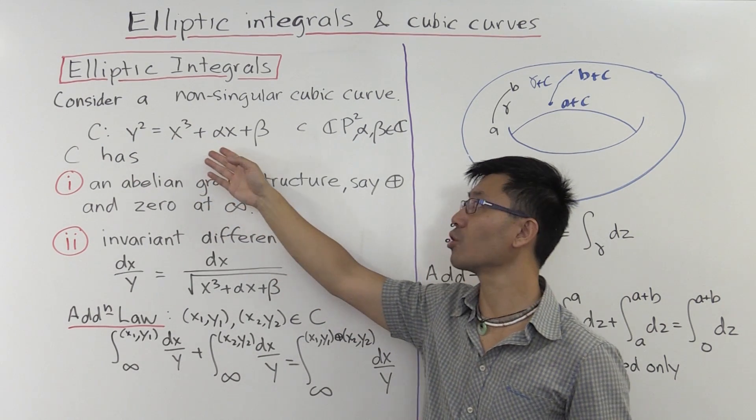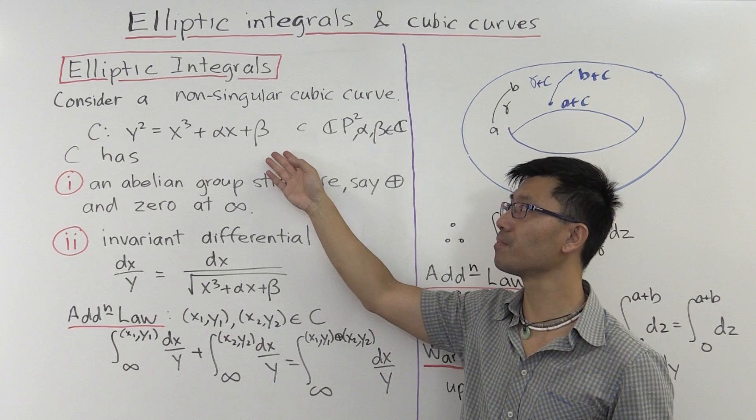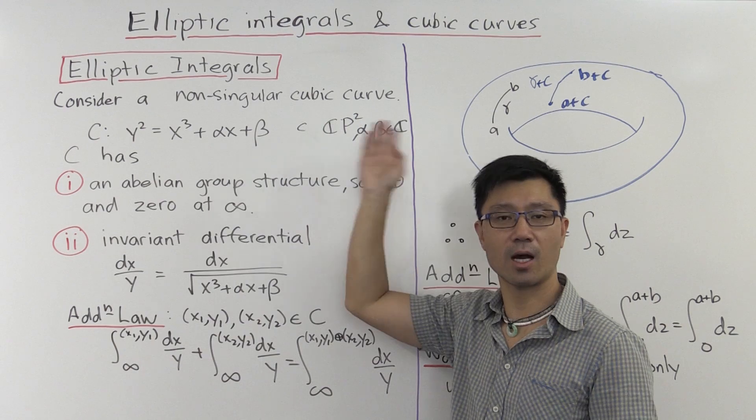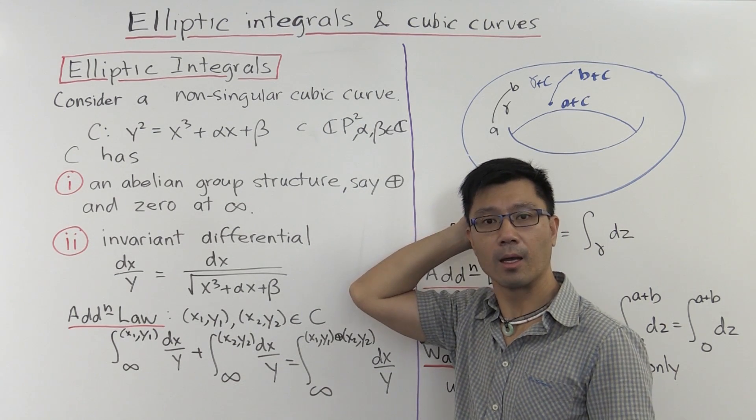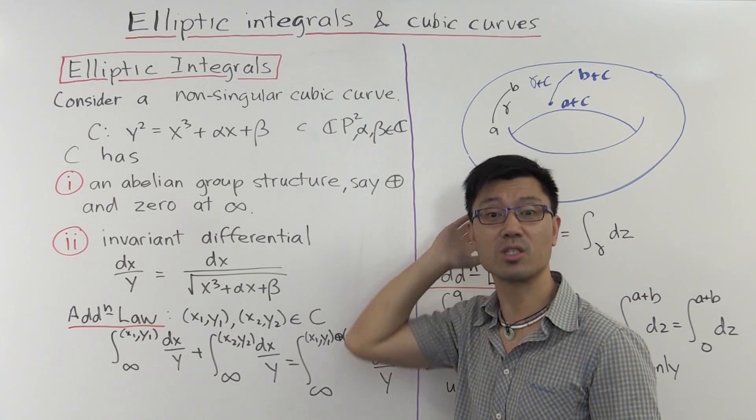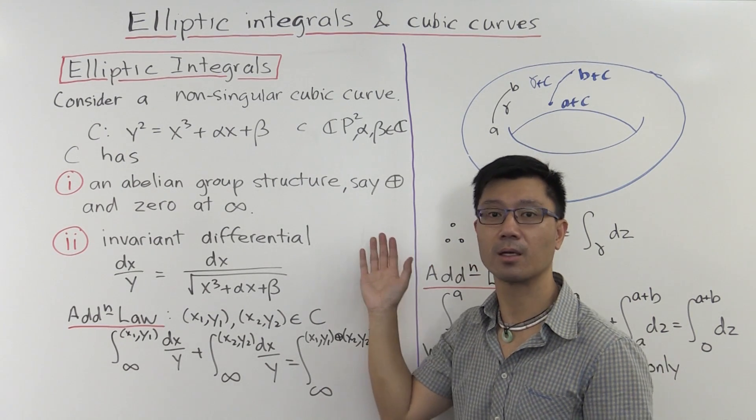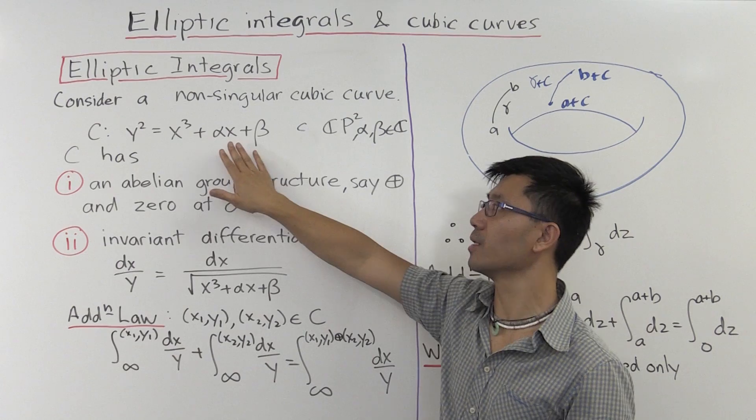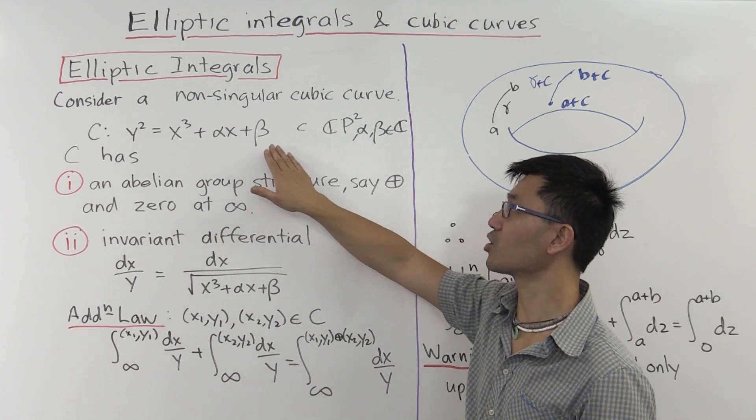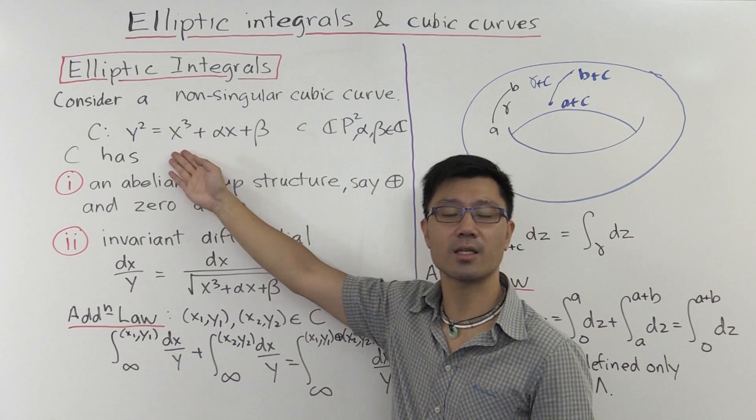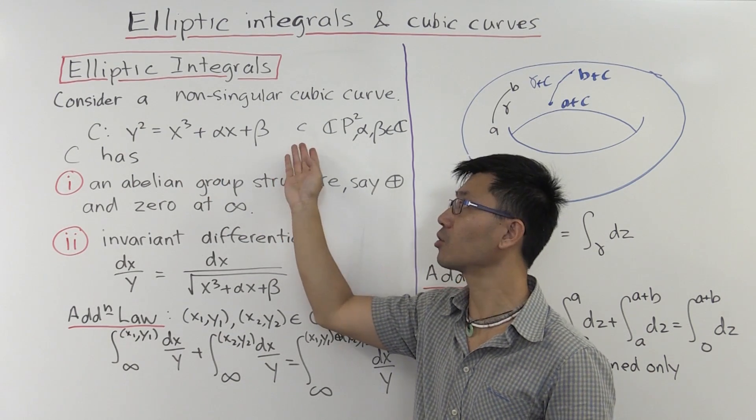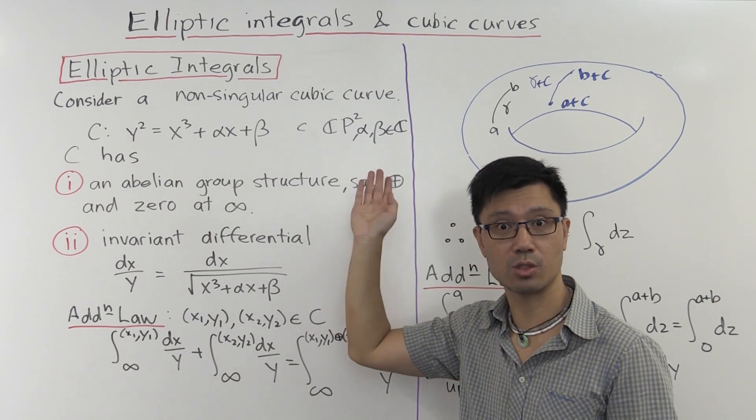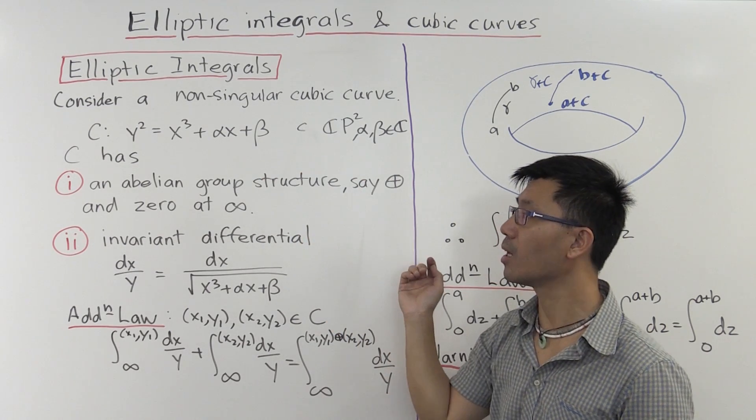So we're going to start with a non-singular cubic curve of this form: y² = x³ + αx + β. And just to remind you, this non-singularity ensures that it is indeed isomorphic to some two torus as opposed to something that's singular and which is not a manifold. In terms of the parameters α and β here, these constants, it just means that this cubic polynomial here has three distinct roots.